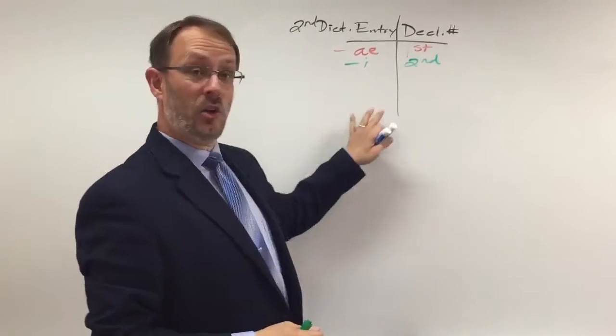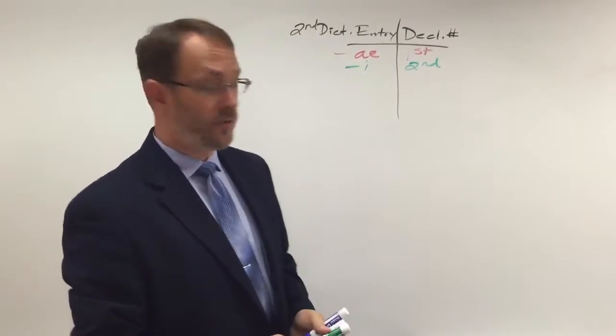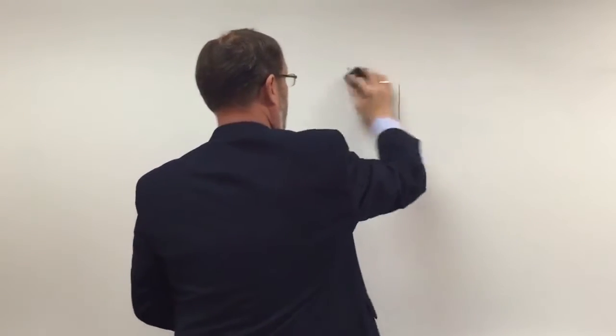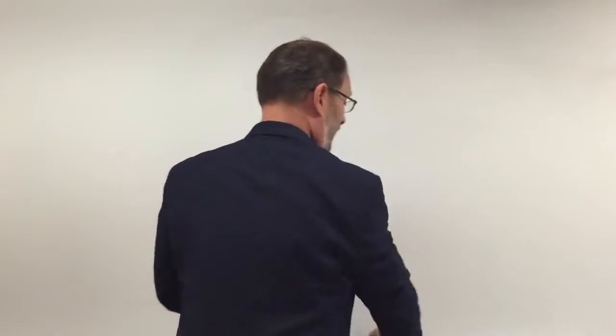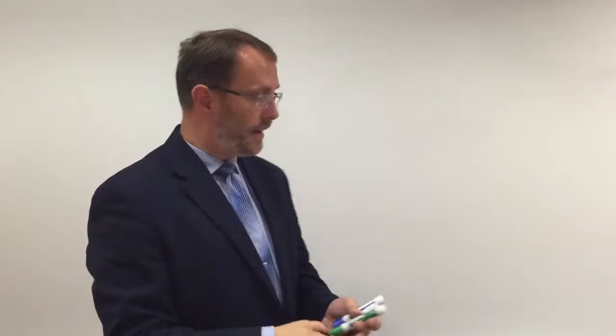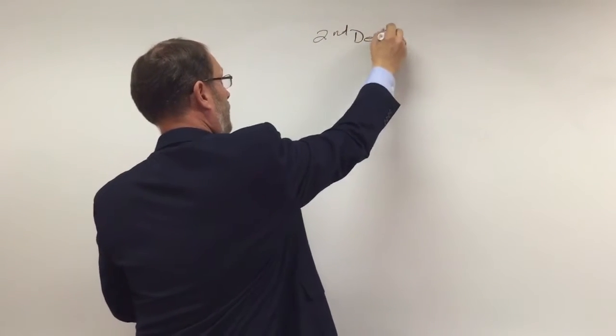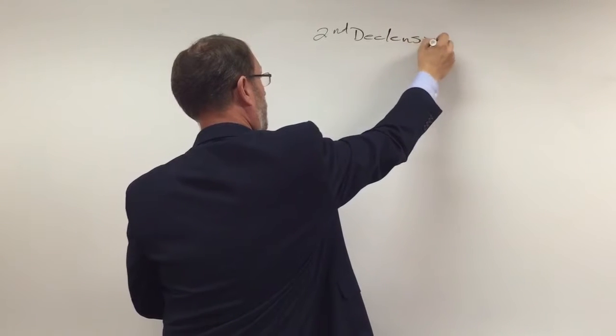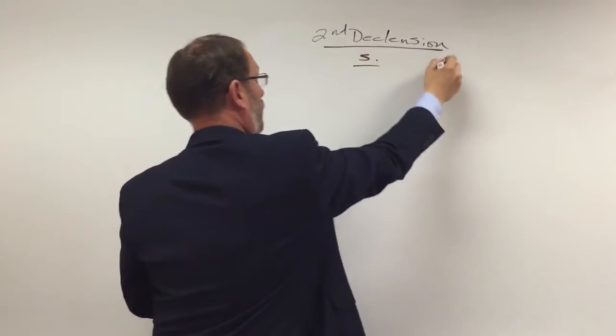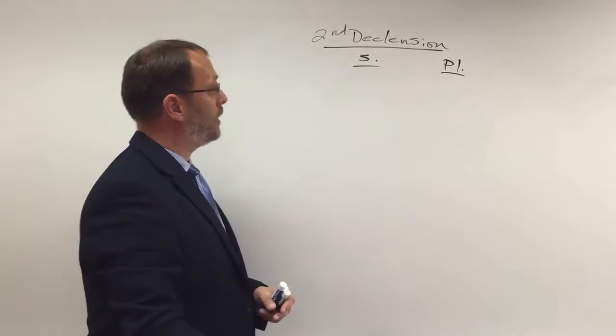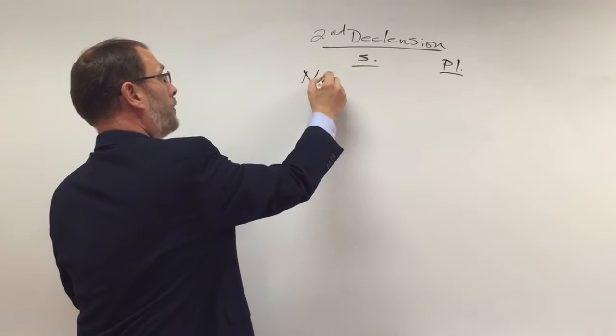As I say, we're going to add to that as time goes on, but that'll be a good place for us to start. So what we want to see is what the cases look like for second declension. So here we go, second declension. And we'll set up our singular and plural columns as before. Drop the noun cases down the side.